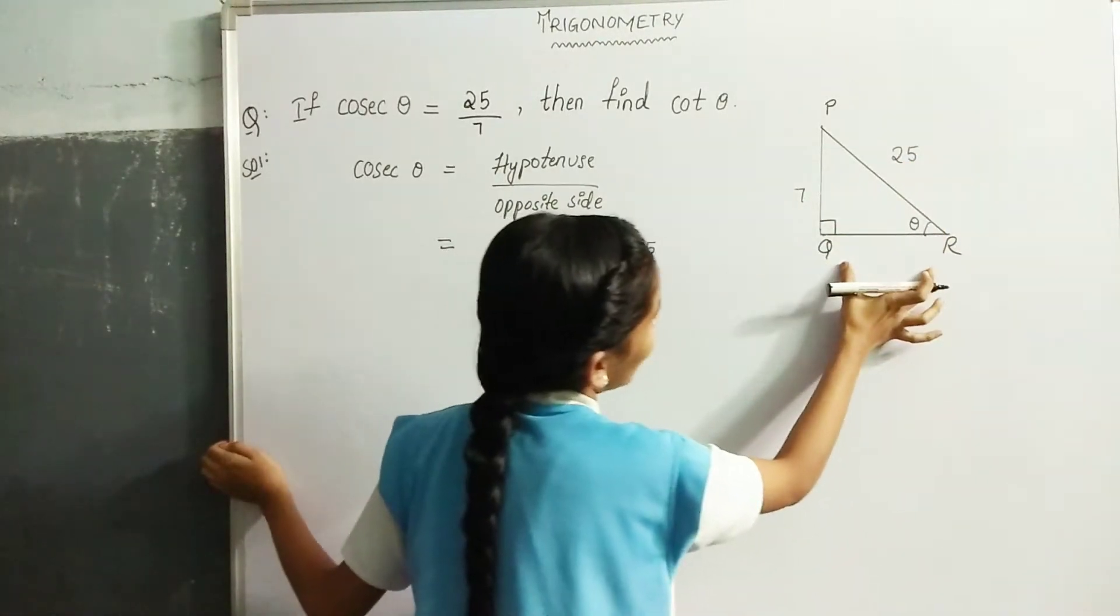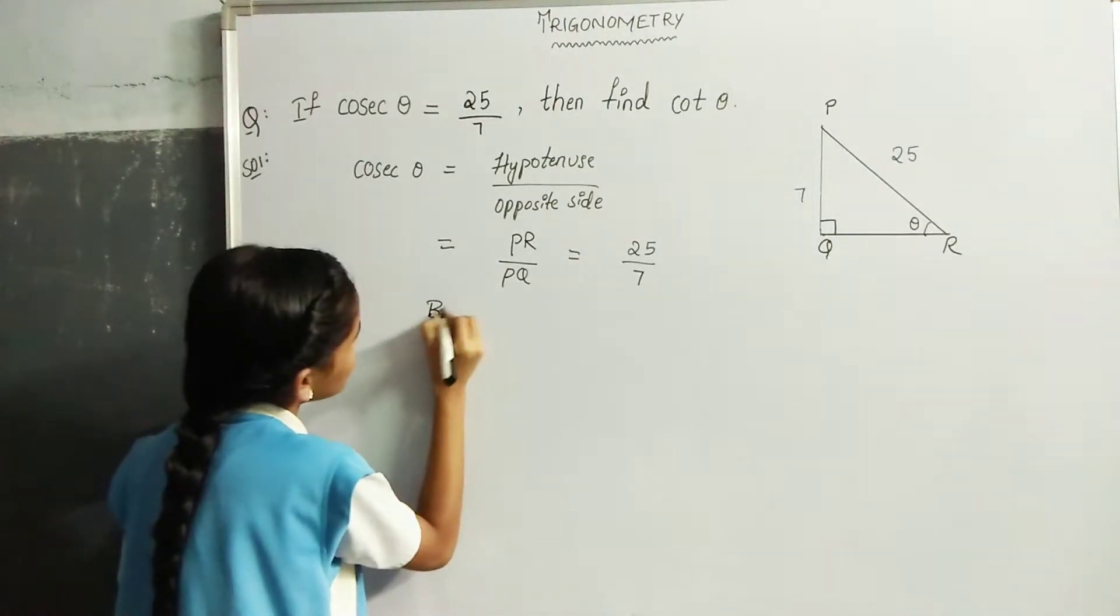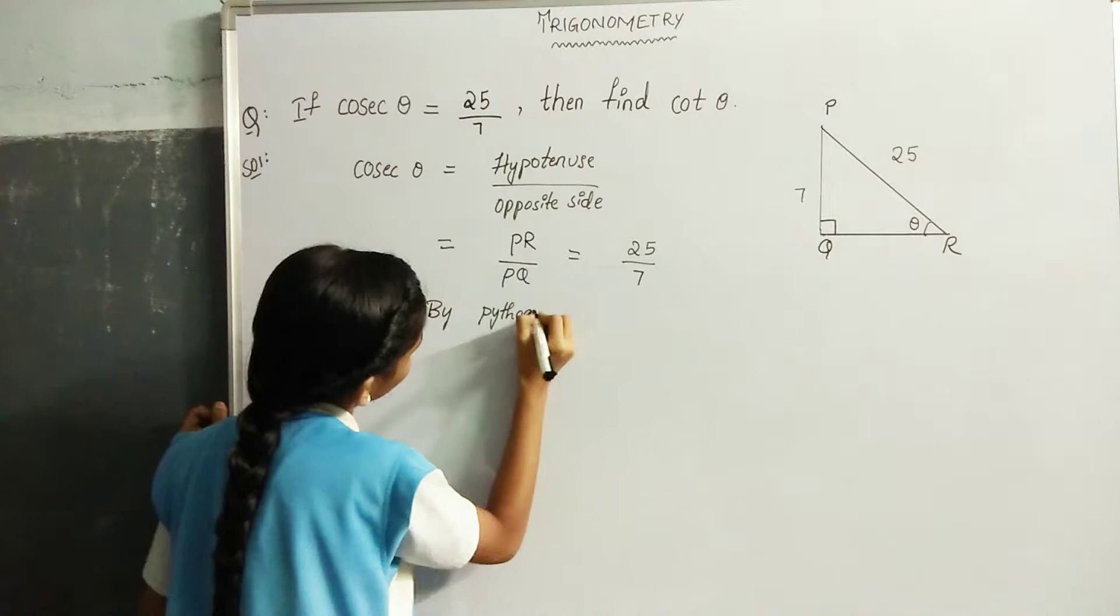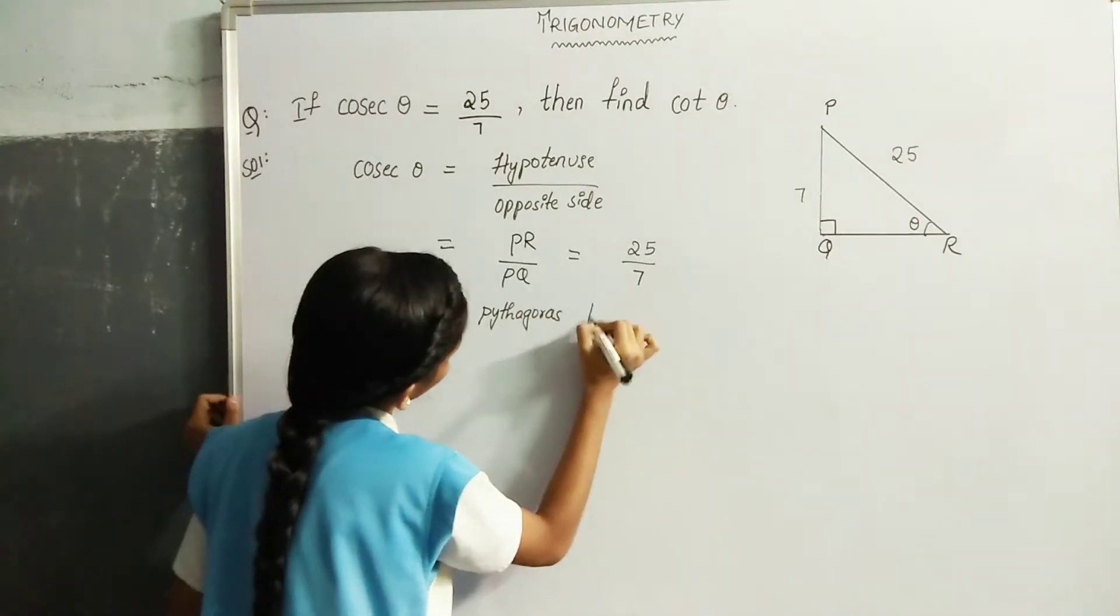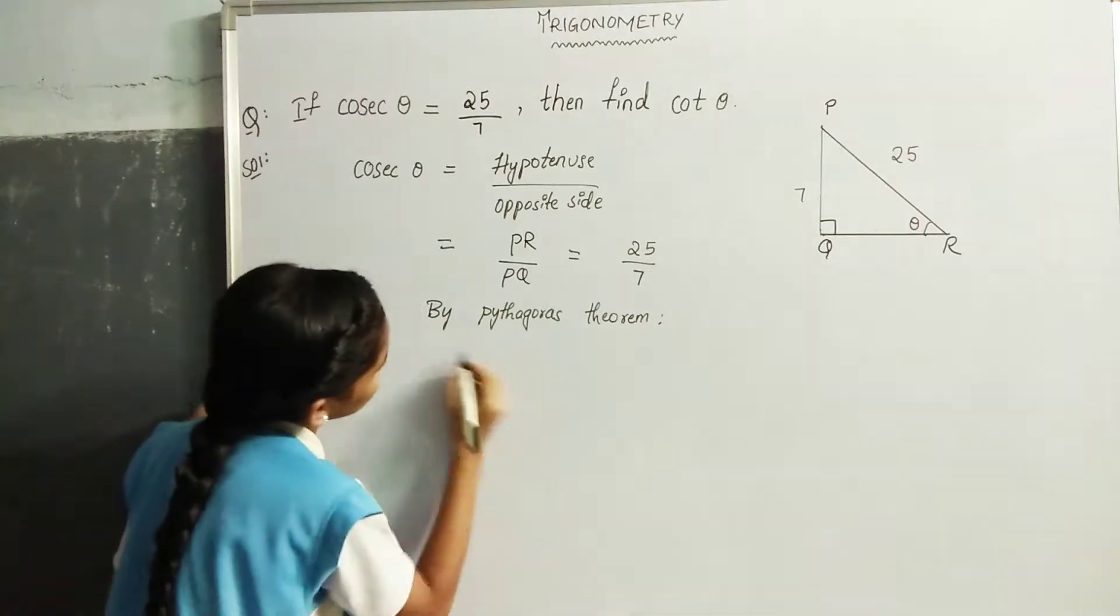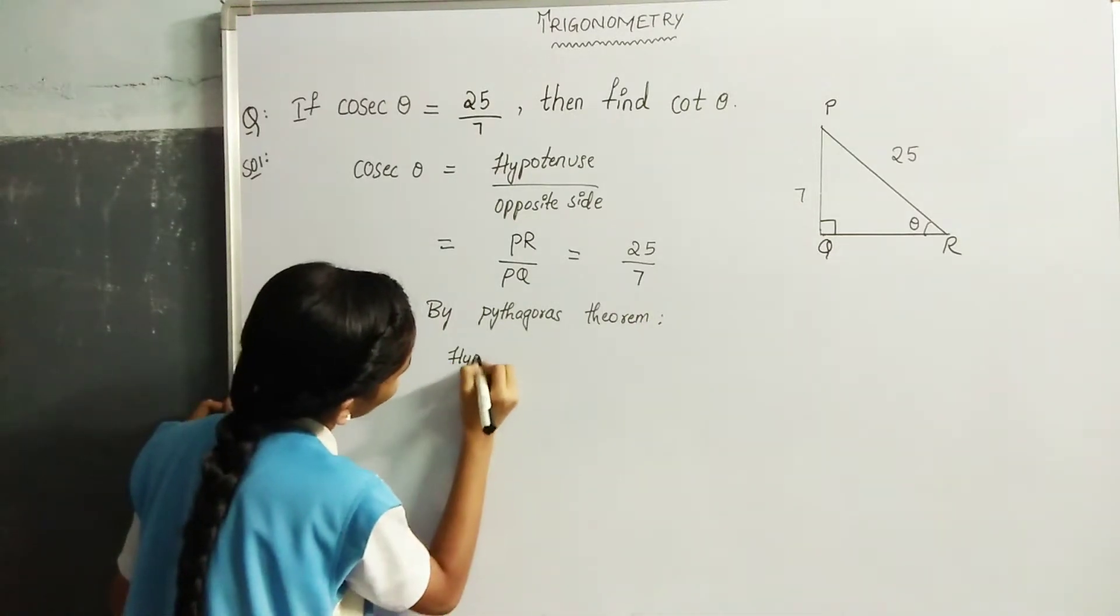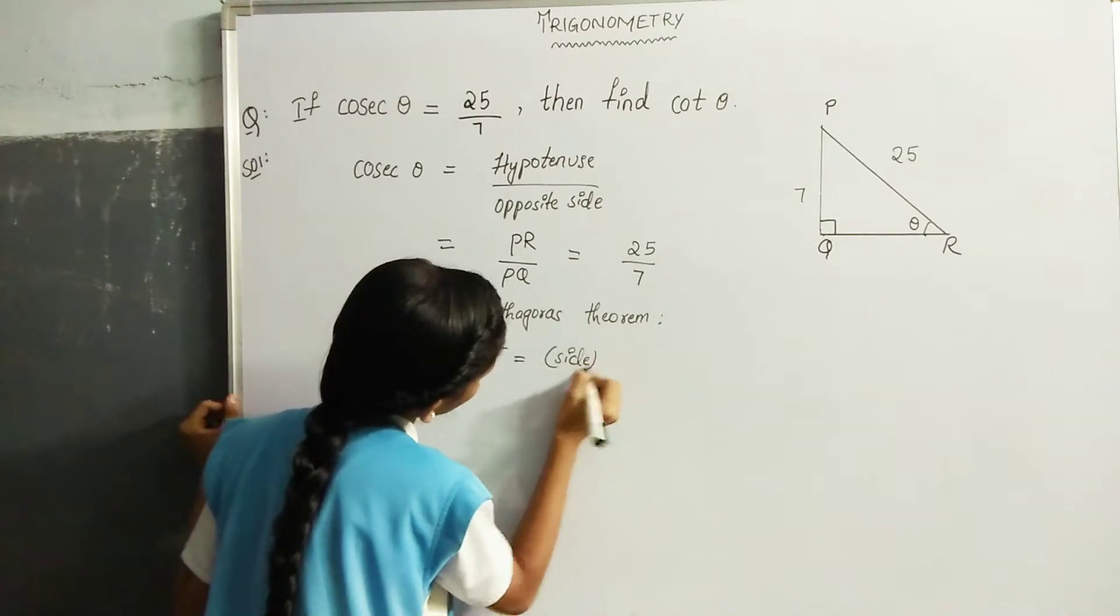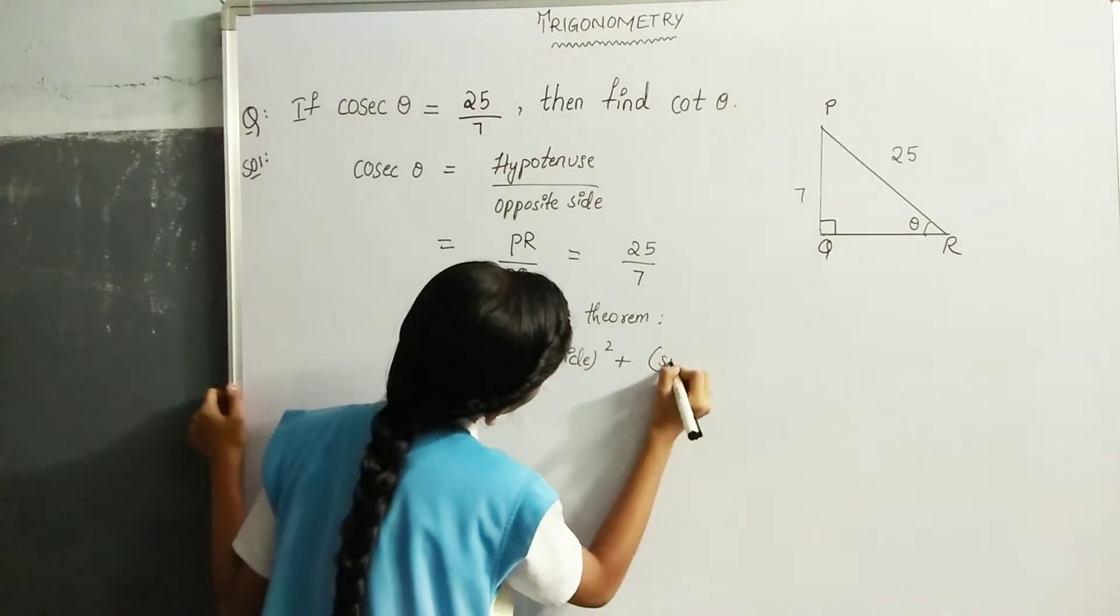We have to find QR side by Pythagoras theorem. Pythagoras theorem: hypotenuse square is equal to side square plus side square.